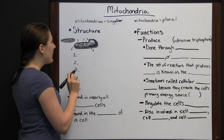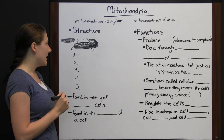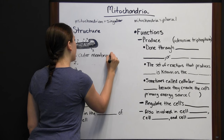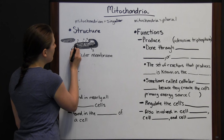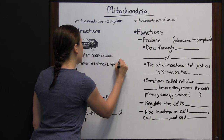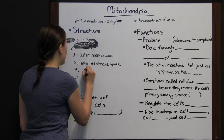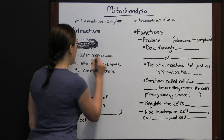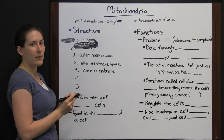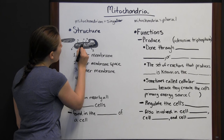The space between the outer membrane and the next line is called the inter-membrane space. That next line is the inner membrane. So you have the outer membrane, the inner membrane, and the inter-membrane space — the space between the two.